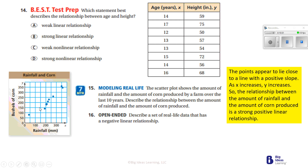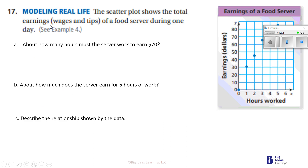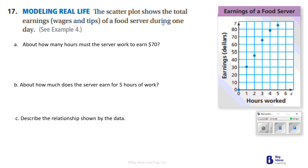Number 17: the scatter plot shows the total earnings — wages and tips — of a food server during one day. Every hour that goes by, the amount of tips grows. About how many hours must the server work to earn seventy dollars? Seventy dollars would be right here, and I would say probably about three and a half hours.